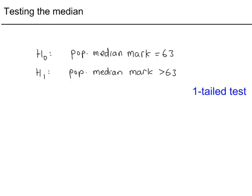A teacher claimed that the median mark for a test was 63 marks. The students thought it was more than 63, so we're going to do a test based on this context. H0: the population median is 63. H1: the population median is greater than 63.